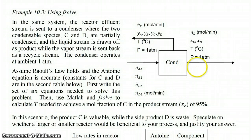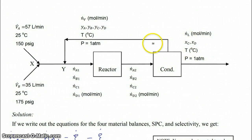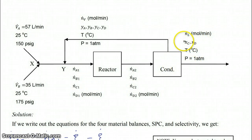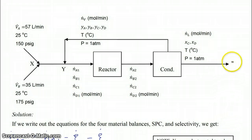We're looking at the balances around a condenser. Just to put this into context, the condenser was placed after the reactor, and both C and D, which are two products of our reaction, are condensable. So we're going to partially condense them into a liquid stream, which is drawn off as a product, and the vapor stream is going to be sent back to recycle.